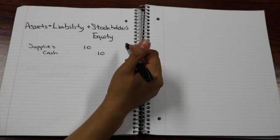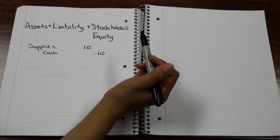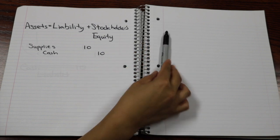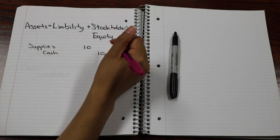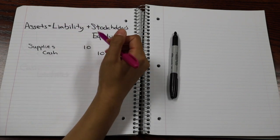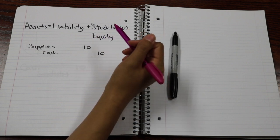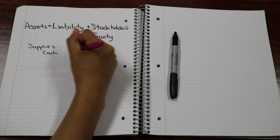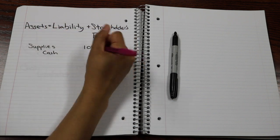And since cash and supplies are both on the asset side of the equation, my accounts remain balanced. So because an asset generally has a normal debit balance, when I credit my cash account, it actually counts as a negative.